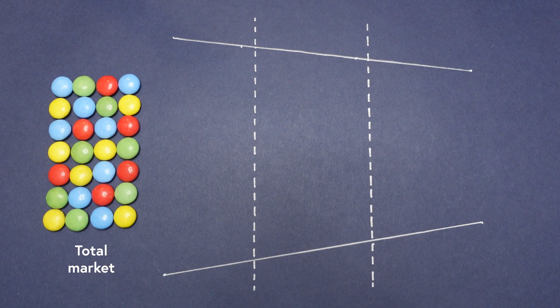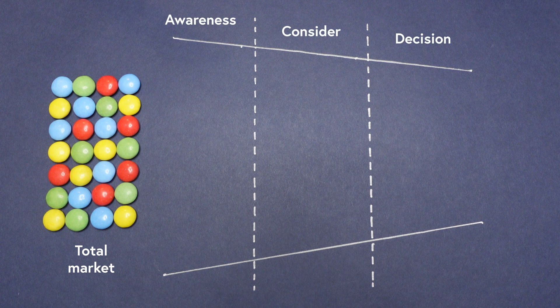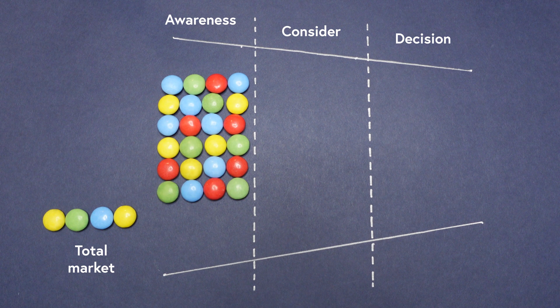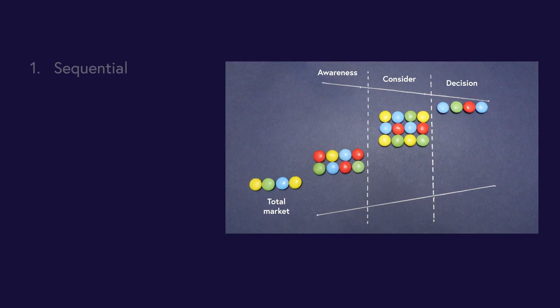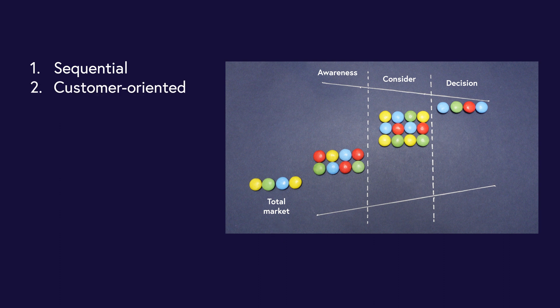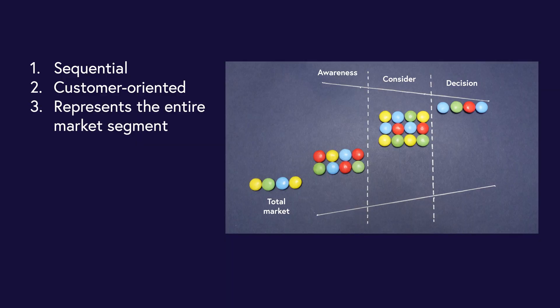By understanding how their brand is received in the market they could determine exactly where to place their efforts in order to generate the biggest return. They understood that if you wanted a share of customers within a given market, then before those customers purchased, they would first need to be aware your brand exists and then consider your brand to be relevant to their needs. Crucially, this funnel has three important features. Number one: it's sequential, meaning you can't be part of one stage without first being part of the previous stage. Two: it's customer-oriented — it views your brand from the customer's perspective, not your own. In other words, you don't get to decide whether customers have heard of you; they do. Number three: it aims to represent an entire market or market segment.